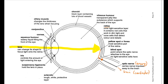Starting at the front and looking at all the layers that light would pass through on its way through the eye: the first layer is the conjunctiva, which is a transparent coat at the front of the eye that protects the cornea. The blue-colored part in the diagram represents the conjunctiva.